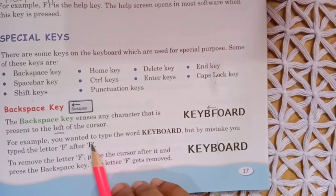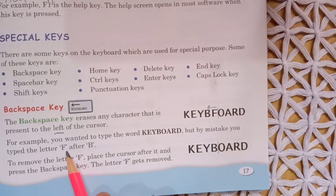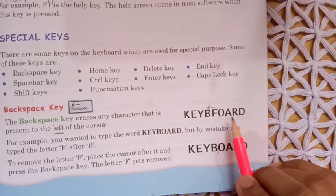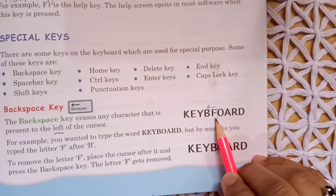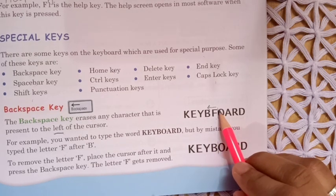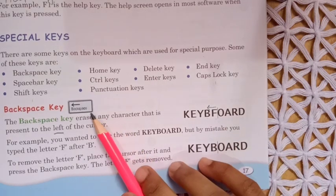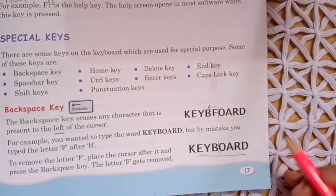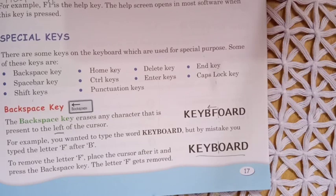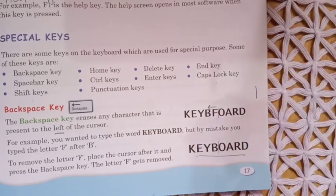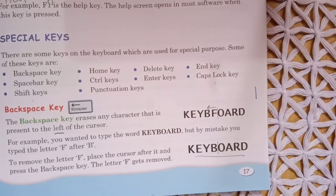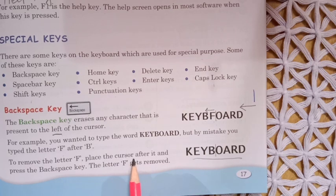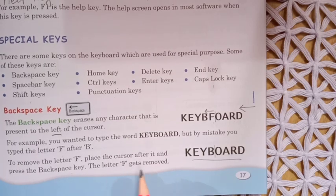For example, you want to type the word 'keyboard' but by mistake you type the letter F after B. The spelling of keyboard is K-E-Y-B-O-A-R-D. To remove the letter F, place the cursor after it using the left button of the mouse, then press the backspace key. The backspace key always erases the letter to the left of the cursor, and the letter F gets removed.